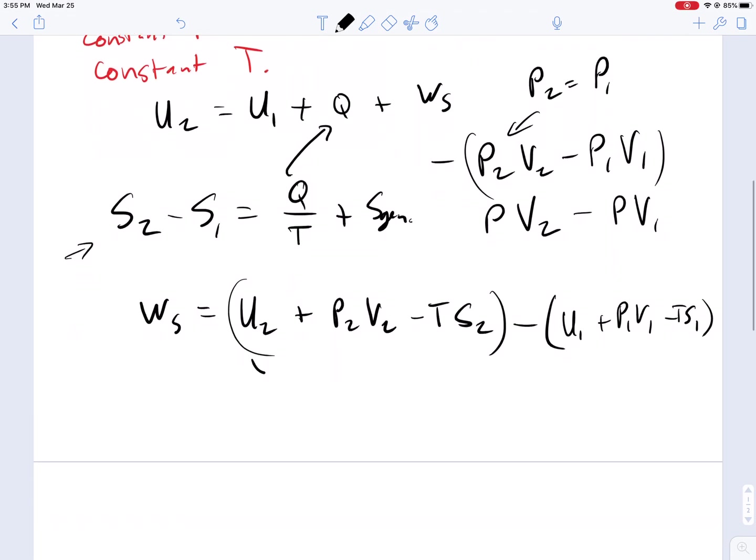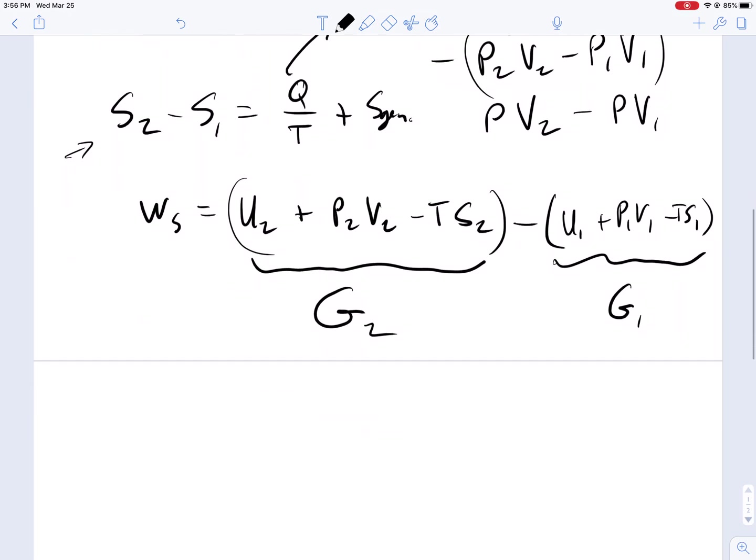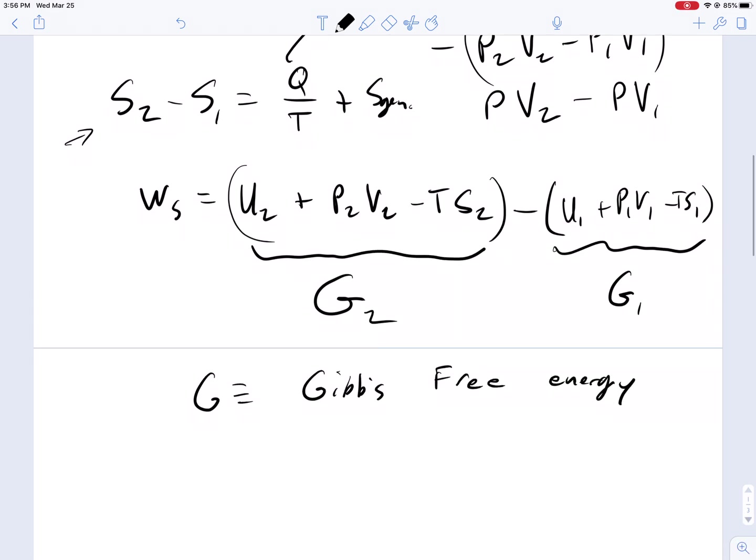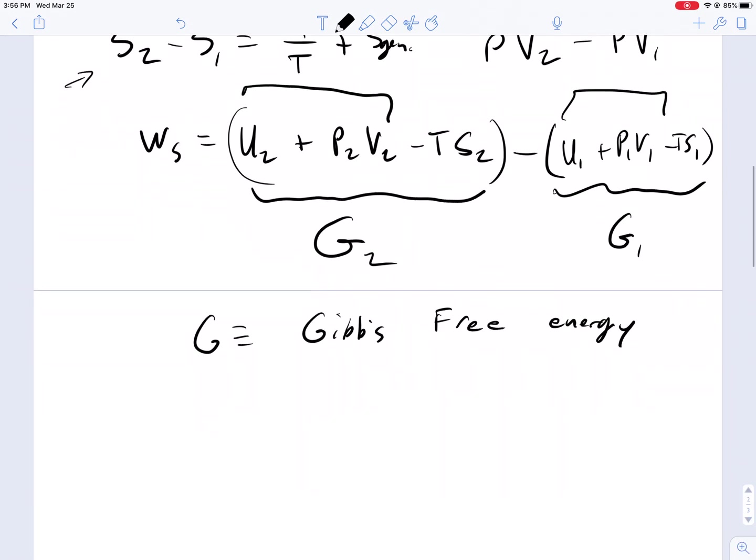Or this whole term, U plus PV minus TS, is given the letter G, so this becomes G2, this becomes G1, and G is called the Gibbs free energy. And you'll notice that within these brackets here, we have our familiar U plus PV. So G we can define as U plus PV minus TS, which equals enthalpy that we looked at before, minus TS.